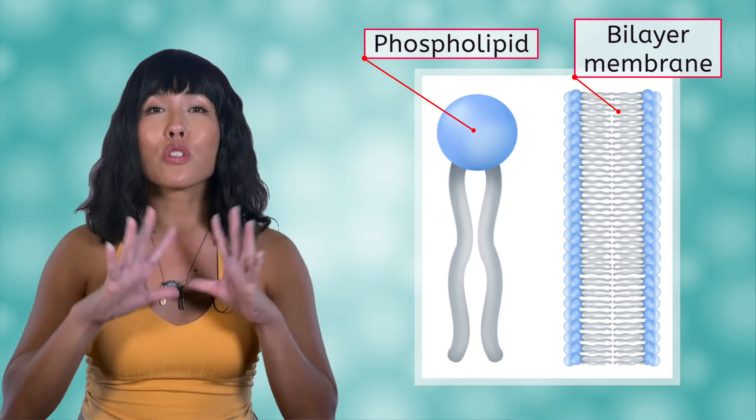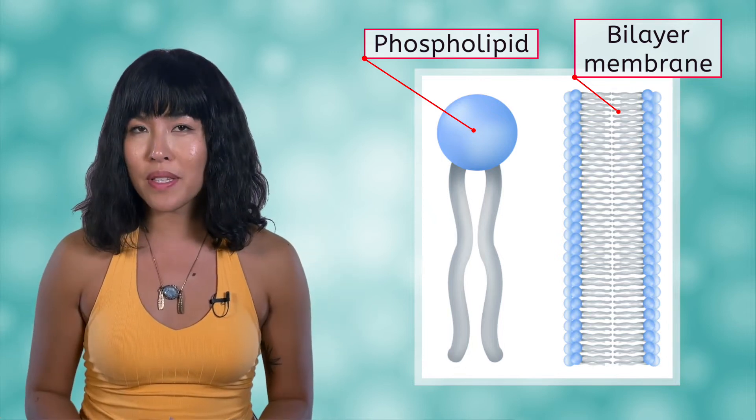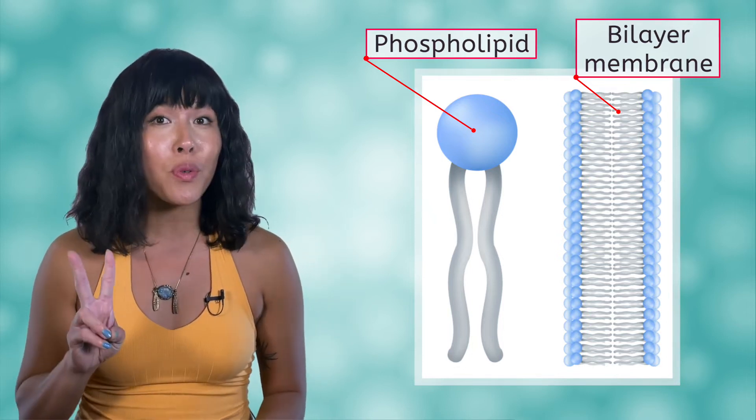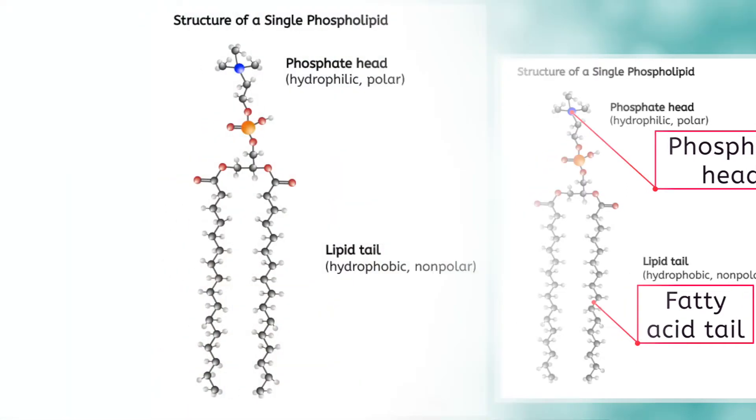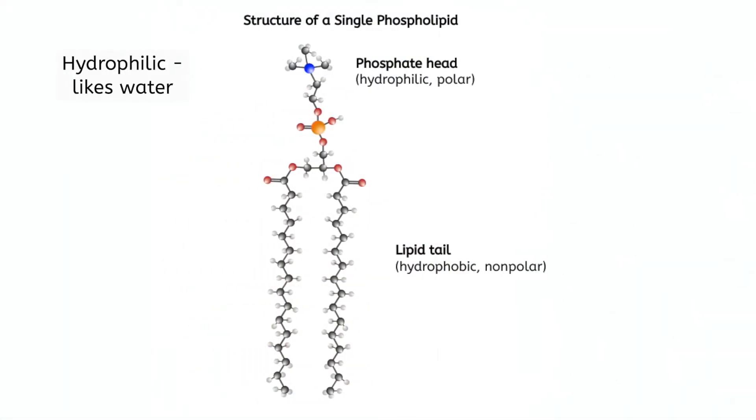The membrane is composed primarily of phospholipids. Remember from unit 2 that a single phospholipid contains a phosphate head and a fatty acid tail. The phosphate head is hydrophilic, meaning that it likes water, because remember phosphate is polar and so is water. Water molecules are too attracted to each other to be attracted to something else that doesn't also have a charge.